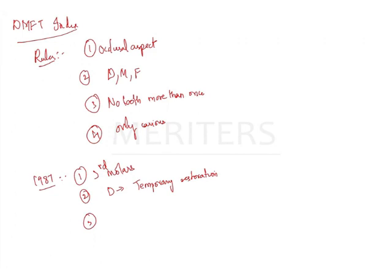Initial lesions such as chalky spots and faint fissures are not considered as D. Only caries cavities count — chalky spots are not considered at all. You should also know the 1997 rules, as some exams may ask about them.